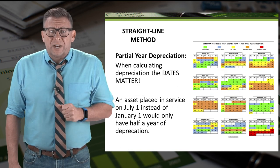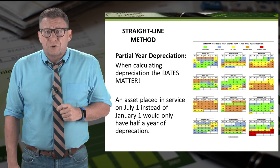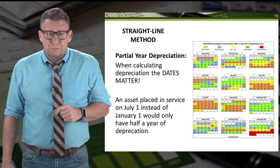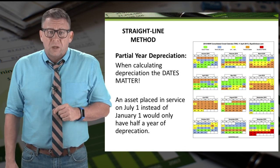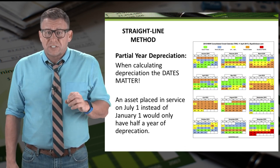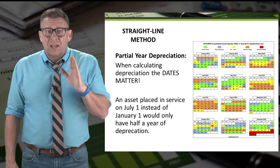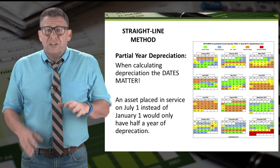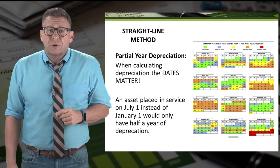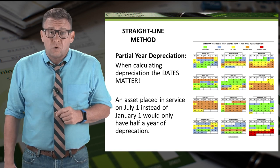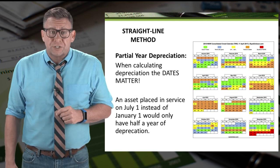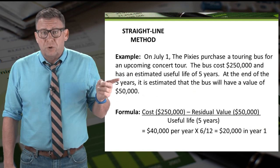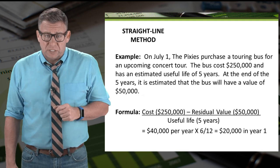The final concept related to straight-line depreciation is partial year depreciation. When assets are placed into service on dates other than the first of the year, we need to adjust how much depreciation we record in the first year. So let's look at our previous example, only let's change the acquisition date.